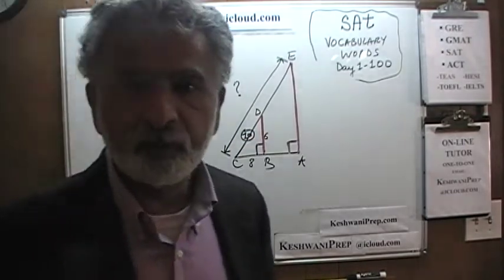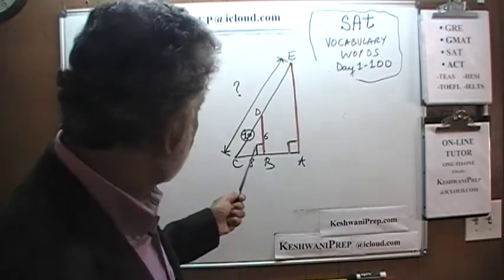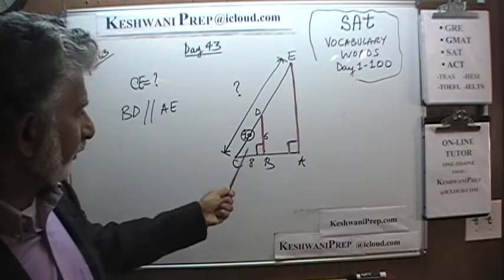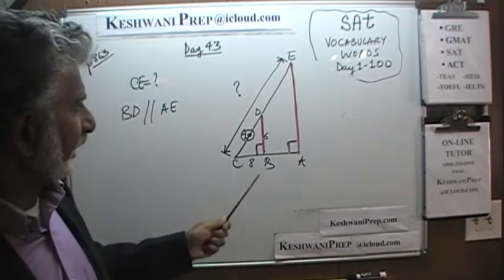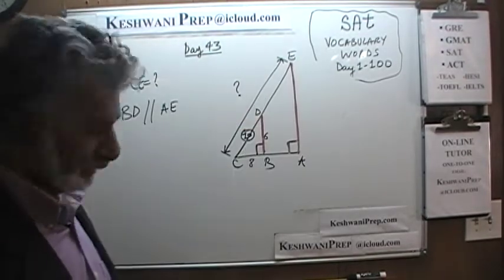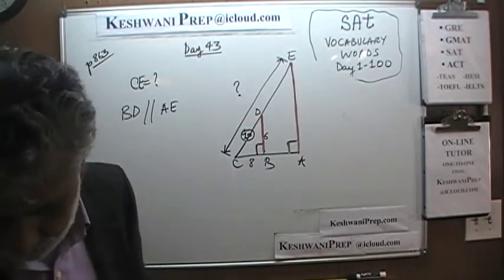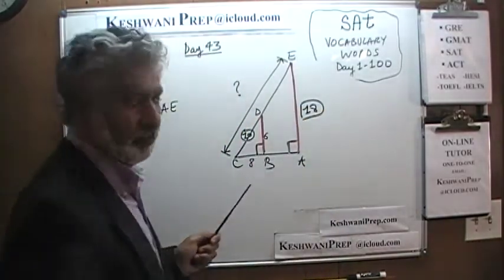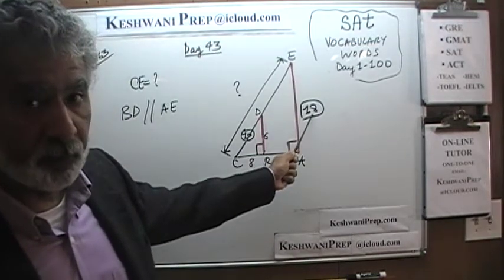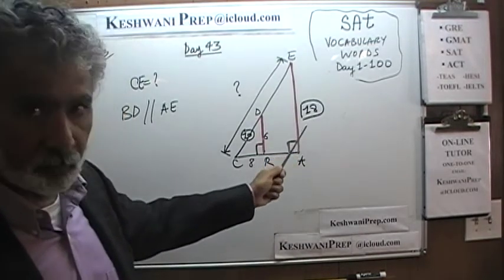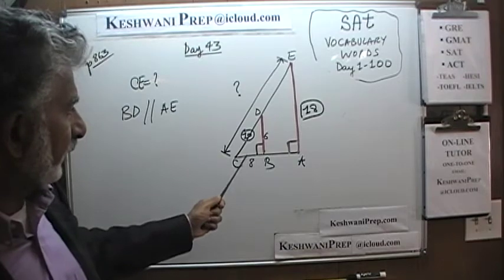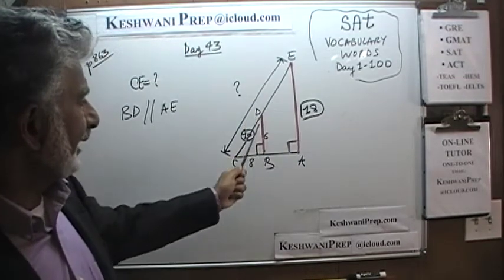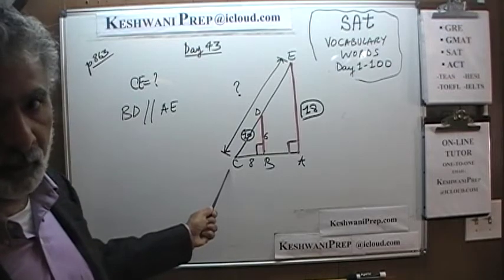You have to be able to recognize the 3-4-5 triangle when you see one — in this case it's a multiple of 2. CD is 10. The question is how much is CE? We are comparing triangle ACE and triangle DBC — those are the two triangles. These two triangles share this angle at C. This angle is shared.